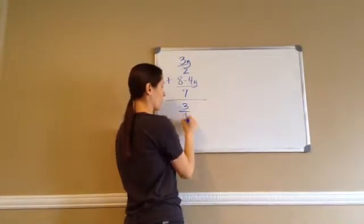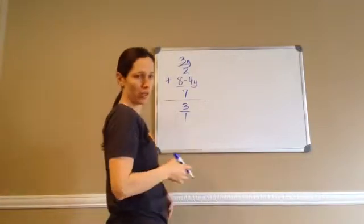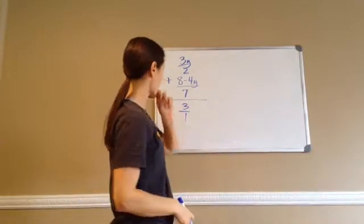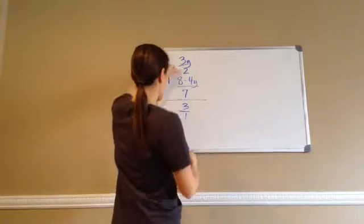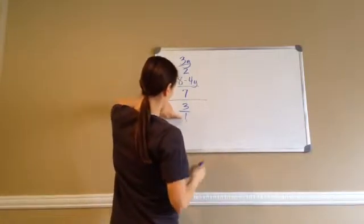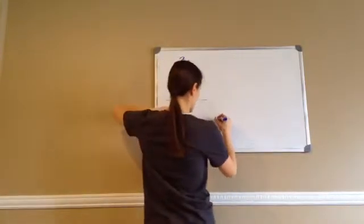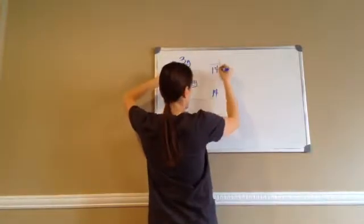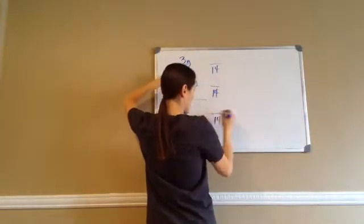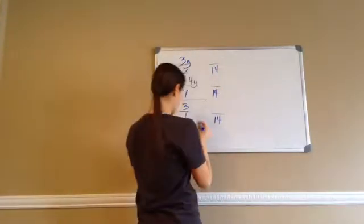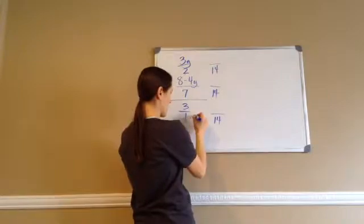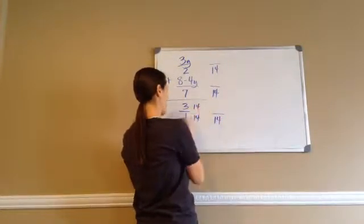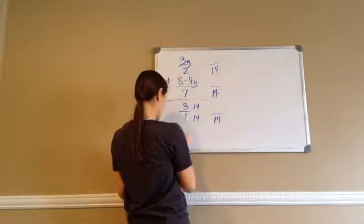I'm going to make it 3 over 1, because 3 is 3/1 as a fraction. Now we have to come up with our common denominator, and hopefully you can see that it's going to be 14 — 7 times 2 is 14. So I'll take 1 times 14 equals 14. What I do at the bottom, I have to do at the top.